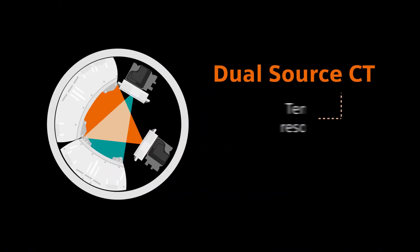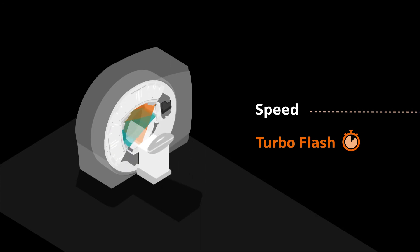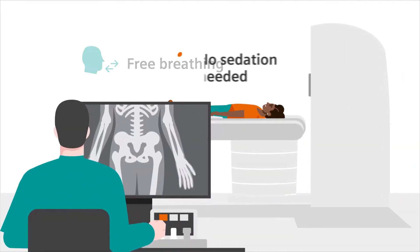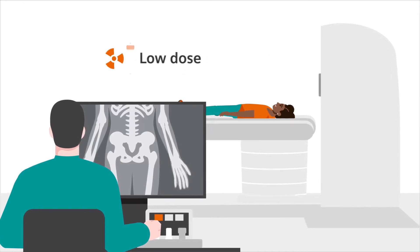But with dual-source CT, we achieved more than just freezing motion in cardiac imaging. Combining the high temporal resolution with very fast table movement results in unparalleled routine acquisition speeds. Therefore, you can scan even moving children without them having to hold their breath, and without using sedation, while still getting images without motion artifacts at very low dose.